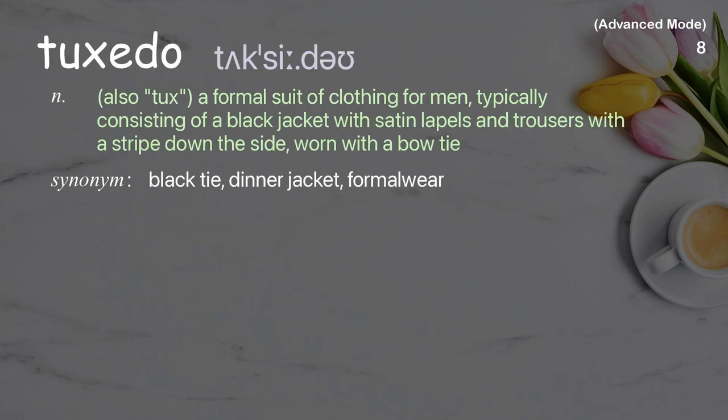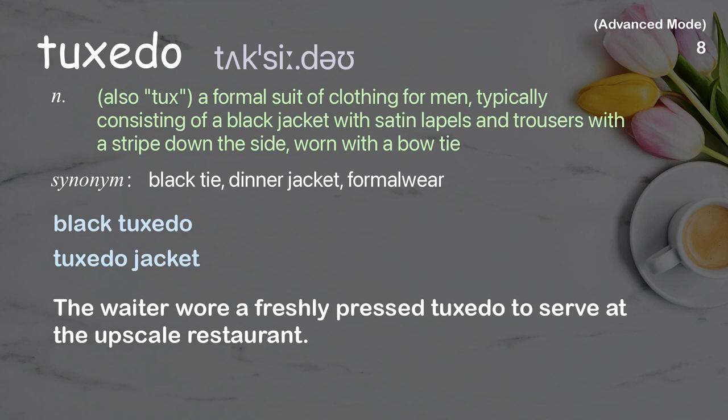Tuxedo. Also tux, a formal suit of clothing for men, typically consisting of a black jacket with satin lapels and trousers with a stripe down the side, worn with a bow tie. Examples: black tuxedo, tuxedo jacket. The waiter wore a freshly pressed tuxedo to serve at the upscale restaurant.